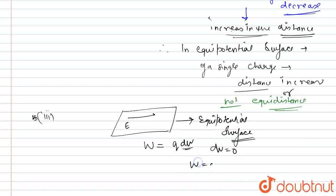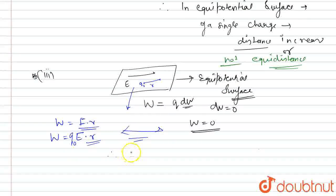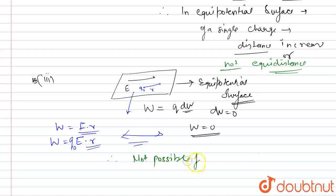So the work done is zero in this case. But if we move a charge q naught from this point to this and the distance between these two point is r, then work done is force into r. Well force on this charge q naught is q naught E, the electric field into the distance r.